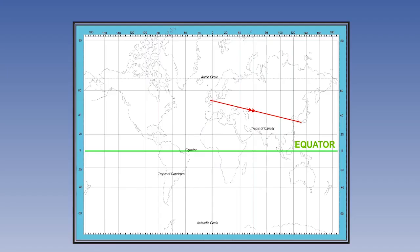We already know how rum lines appear. Because the meridians are parallel lines, a straight line track on the chart will cut all meridians at the same angle. A straight line track on a Mercator chart is a rum line.